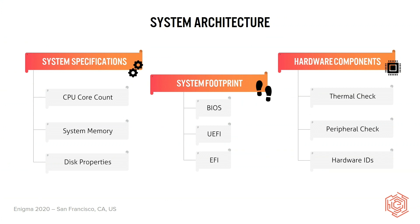We also have the system footprint, which is a pretty common one. It's when malware uses communication between system components and the operating system, such as the basic input-output system (BIOS), the unified extensive firmware interface (UEFI), and the extensive firmware interface (EFI). Finally, we have hardware components, which attempts to obtain information about the hardware itself, such as the thermal readings on a computer, checking if the system has any printers, keyboards, or mouse — which would be a peripheral check — or checking the hardware ID, such as the serial number, the model, or the manufacturer ID.